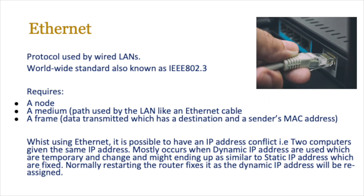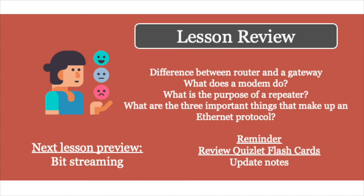Whilst using Ethernet, it's possible to have an IP address conflict, meaning two computers are given the same IP address. This mostly occurs when using dynamic IP addresses, which are temporary and change, and might end up being the same as static IP addresses, which are fixed IP addresses given to a particular node on the network. Normally you fix it by restarting the router, which ensures that dynamic IP addresses are reassigned so hopefully there is no conflict. We'll look at some algorithms that help in this process in due course.